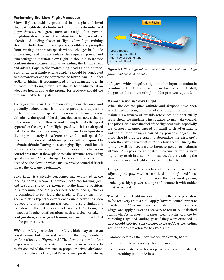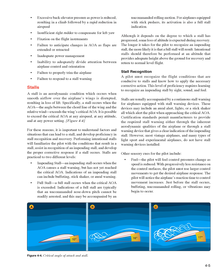To exit the slow flight maneuver, follow the same procedure as for recovery from a stall: apply forward control pressure to reduce the AOA, maintain coordinated flight and level the wings, and apply power as necessary to return to the desired flight path. As airspeed increases, clean up the airplane by retracting flaps and landing gear if they were extended. A pilot should anticipate the changes to AOA as the landing gear and flaps are retracted to avoid a stall. Common errors include failure to adequately clear the area, inadequate back elevator pressure as power is reduced resulting in altitude loss, excessive back elevator pressure resulting in a climb followed by a rapid reduction in airspeed, insufficient right rudder to compensate for left yaw, and fixation on the flight instruments.